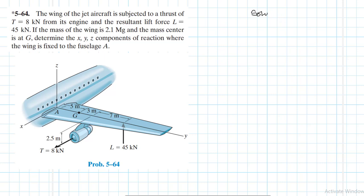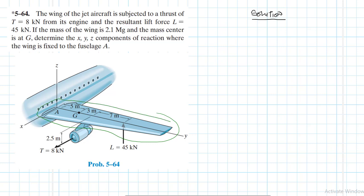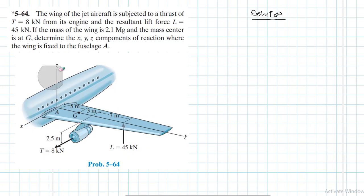This problem is from the Engineering Mechanics Statics textbook, 13th edition by R.C. Hibbeler. We have a wing here that is subjected to a number of forces: the lift force, the thrust from the jet engine, and the weight. This wing will behave like a cantilever — it is fixed at A — so we expect to have moments at A in all directions as well as translational forces.